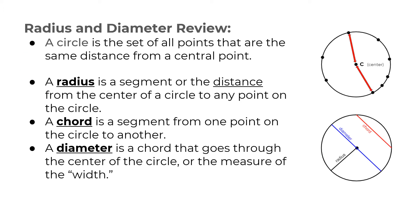The first thing we need to talk about is some parts of circles. A circle is basically an infinite number of points that are the same distance away from a central point. If you look at this circle, all the points on the outside are going to be the same distance away from the center. That distance from the center is the radius — the radius is the distance from the center to any point on the circle.